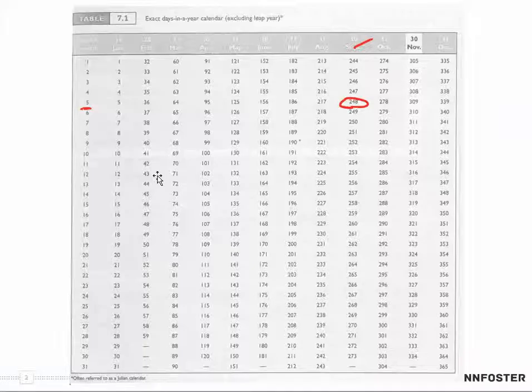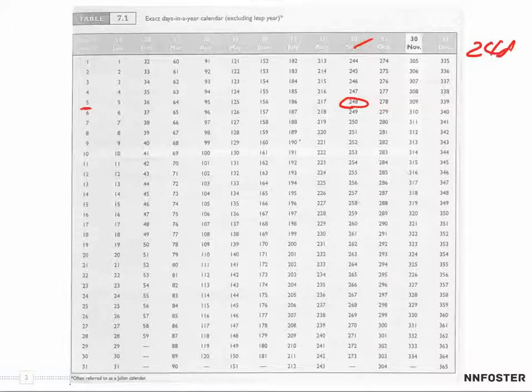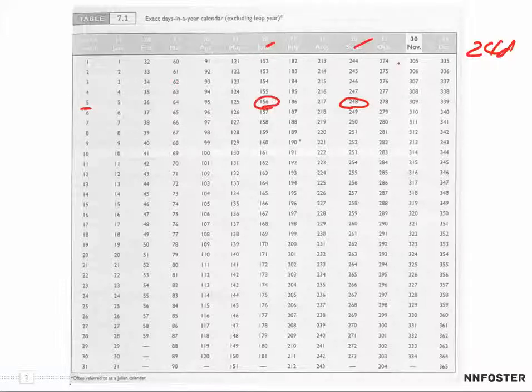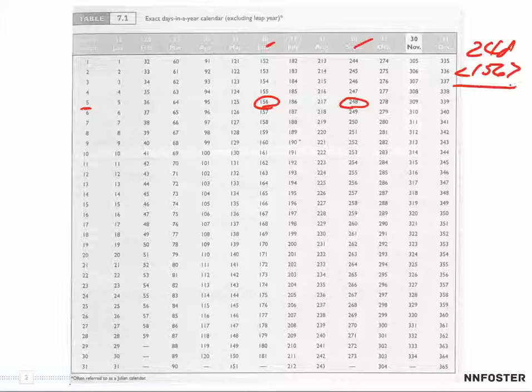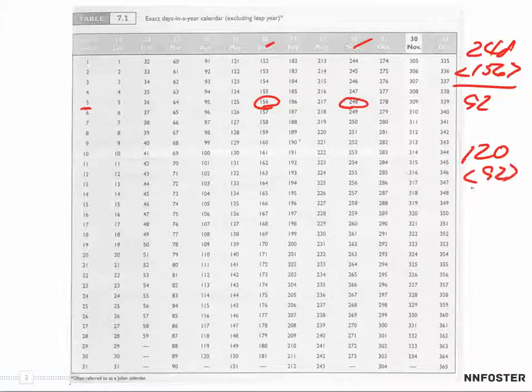Well, I want to know the number of days in this period. So if I start with this number, then I need to subtract whatever day this is in order to be able to get the entire period. Okay, so let me go back up here. I started on September 5th at 248.